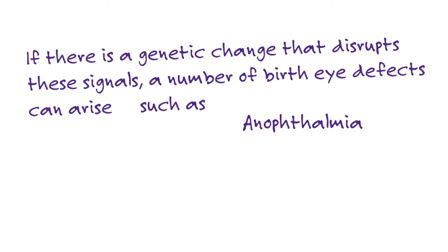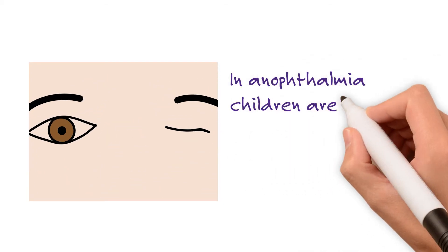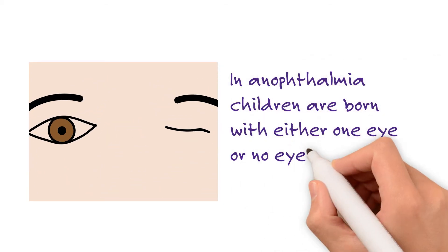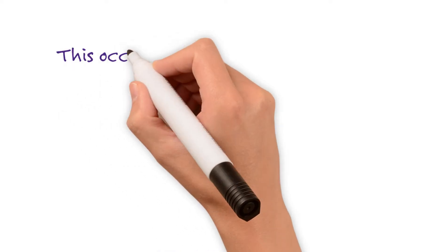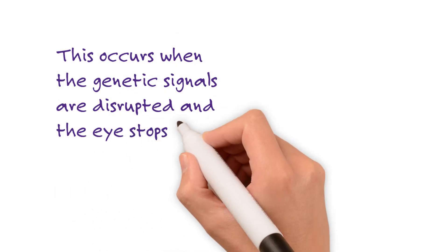Such as anophthalmia, microphthalmia and coloboma. In anophthalmia, children are born with either one eye or no eyes. This occurs when the genetic signals are disrupted and the eye stops developing.